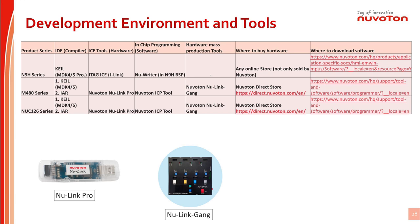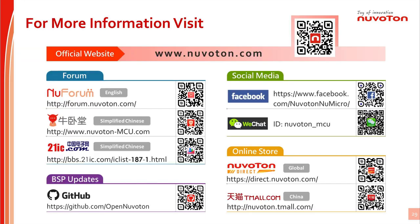For the IDE tool, engineers should prepare it by themselves. For the ICP tool software, engineers could download it from the Nuvoton website. For the ICP tool and mass production tool hardware, engineers could purchase them from the Nuvoton online store. This page also shows Nuvoton online resources including website, forum, online store, social media, and the Nuvoton page on GitHub.